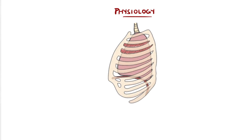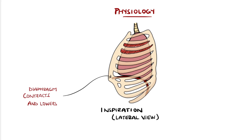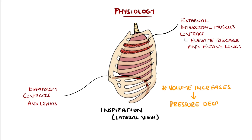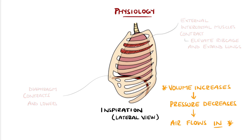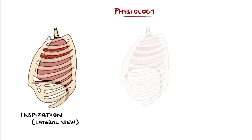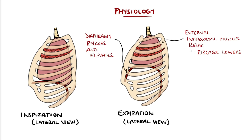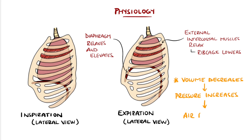In inspiration, the diaphragm and intercostal muscles contract, causing a flattening of the diaphragm and elevation of the chest wall respectively. This increases the volume of the lungs, causing pressure within them to fall, and so air is drawn in. Exhalation features the opposite: the diaphragm relaxes and elevates, the intercostal muscles relax, and the lung volume reduces, causing pressure to rise and forcing air out.